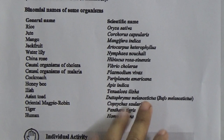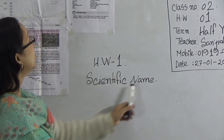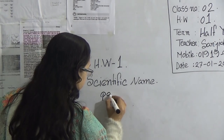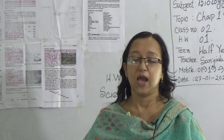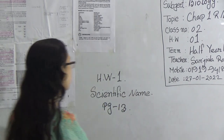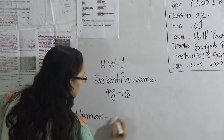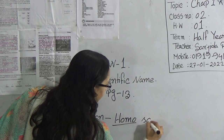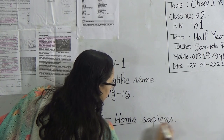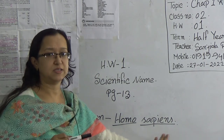Your homework is to memorize these scientific names at home and also write them in your homework copy. This is your first homework for next week — Homework number 1: scientific names, page number 13. When you write the scientific name, for example 'Homo sapiens,' you must underline it. There are two parts to the name.